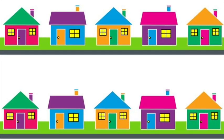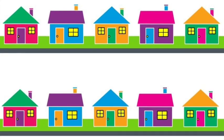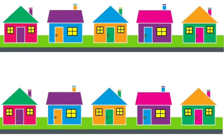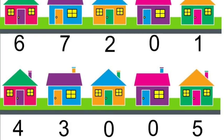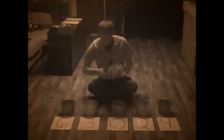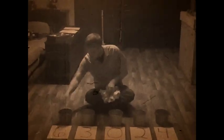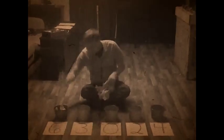Another great example to talk about mean is talking about houses — specifically, the average number of kids that live per house. Here's our data: we have six in one house, seven in one house, two, zero, one, and so on and so forth. This is very similar to our buckets. In this case, instead of buckets it's houses, and instead of socks it's children.